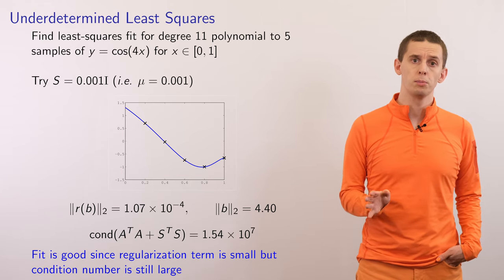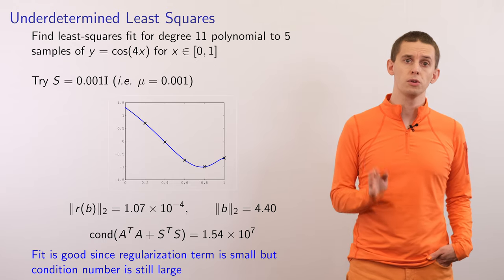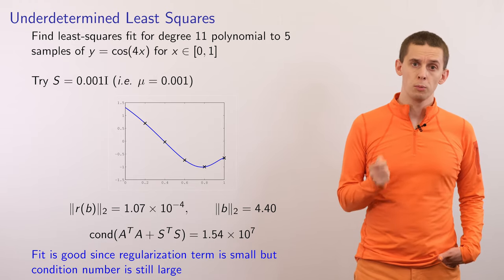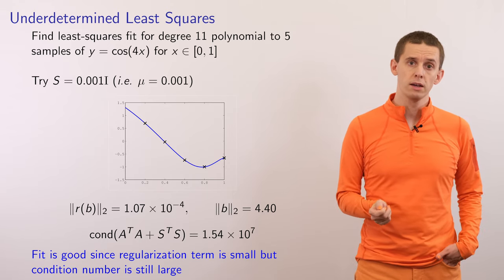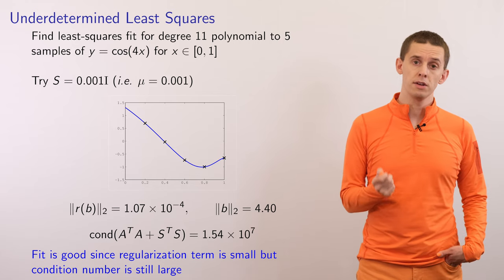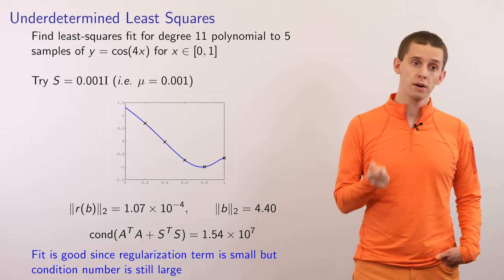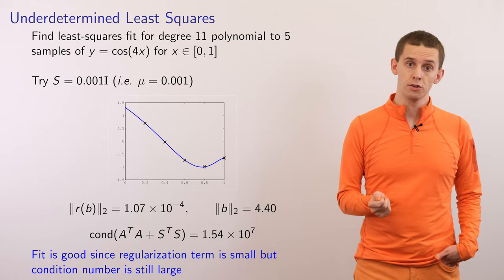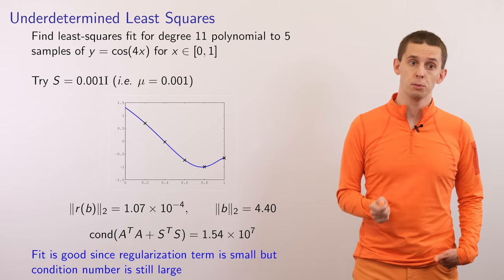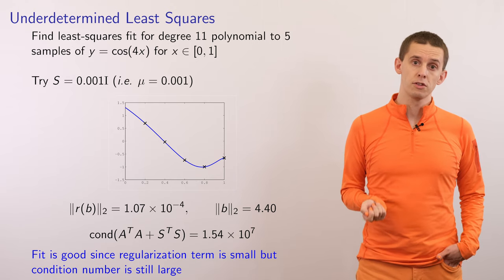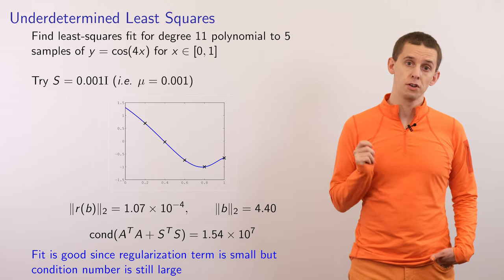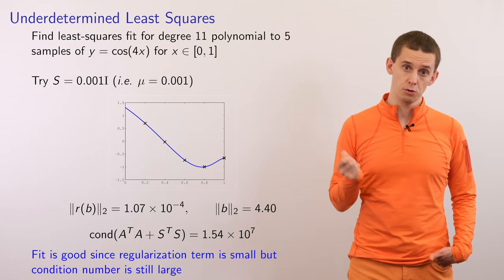Let's recap some of the results of our Python example. In the first case, with S equal to 0.001 times I, we're applying only a small amount of regularization. This means the main term from A transpose A is dominant, so we match the data points preferentially. The resulting polynomial goes very closely through our data points, with a residual around 10 to the minus 4 and a parameter vector magnitude of around 4.4. However, the condition number for A transpose A plus S transpose S is still around 10 to the 7, so we're still dealing with a rather poorly conditioned matrix.